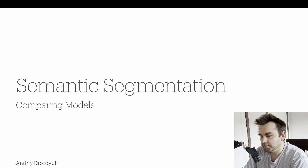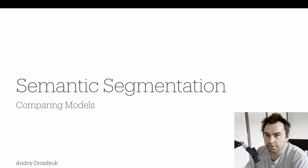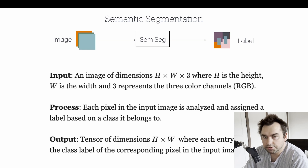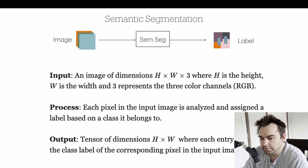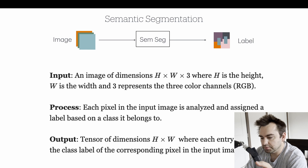Today I want to talk about semantic segmentation, specifically how to compare different models in a semantic segmentation problem. Semantic segmentation is an algorithm that takes an image and produces labels. The input is an image as a standard dimensional tensor of height by width by three, representing the RGB colors. The process maps each pixel's three color values to a specific classification.